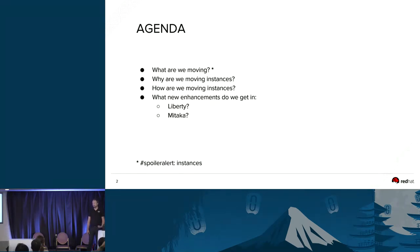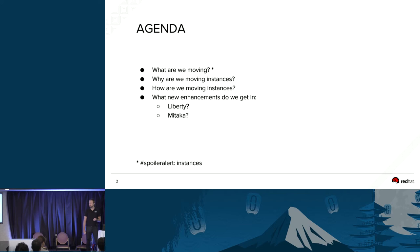I'll be focusing first on defining what we're actually moving. The spoiler alert is instances — compute instances we're moving around. But what does that really mean in terms of the components of those virtual machines? Why we're moving them? How we're moving them, in terms of those user-facing APIs to actually initiate the moves, and then also the new enhancements that are coming both in the current and upcoming release.